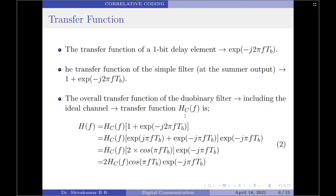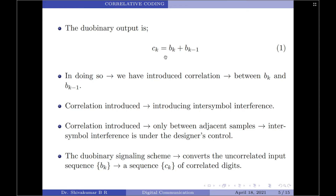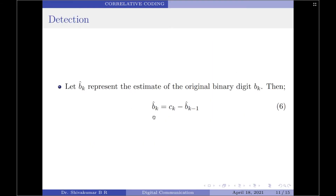Going back to equation 1, to construct Ck we added the current and previous binary digits. At the receiver, to obtain the estimate of the current binary digit, we subtract the previous estimate from the currently received digit Ck — which is why the detection is the inverse of the transmitter. One of the biggest disadvantages of this detection process is that once errors are made, they tend to propagate. The decision for the current digit B̂k depends on the correctness of the previous decision B̂(k−1), so if the previous decision is an error, the current decision is very likely also an error. Therefore, the duobinary signaling scheme suffers from chaining of errors.